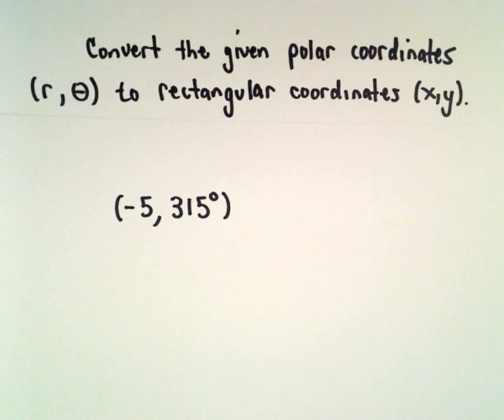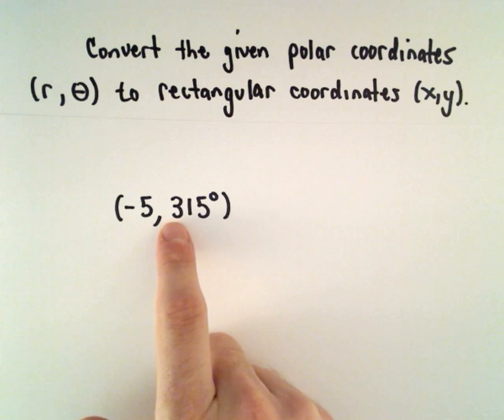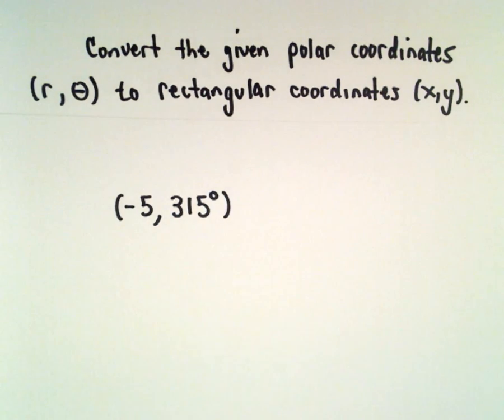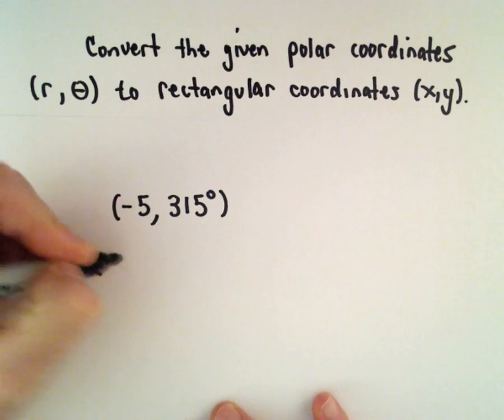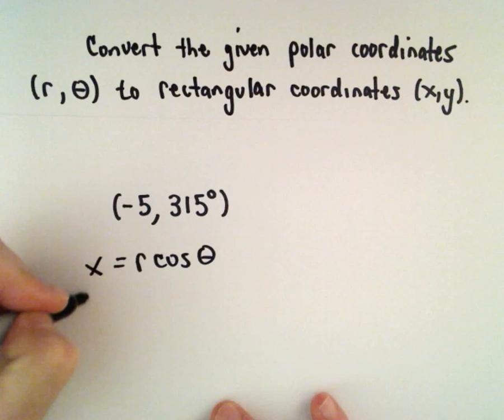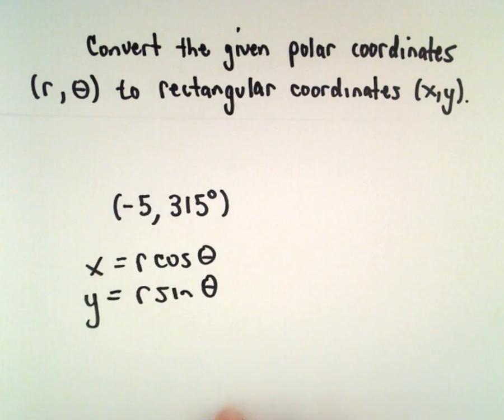Okay, here we're going to convert the polar point to rectangular coordinates. So we'll use the formula x equals r times cosine of theta and y equals r times sine of theta.